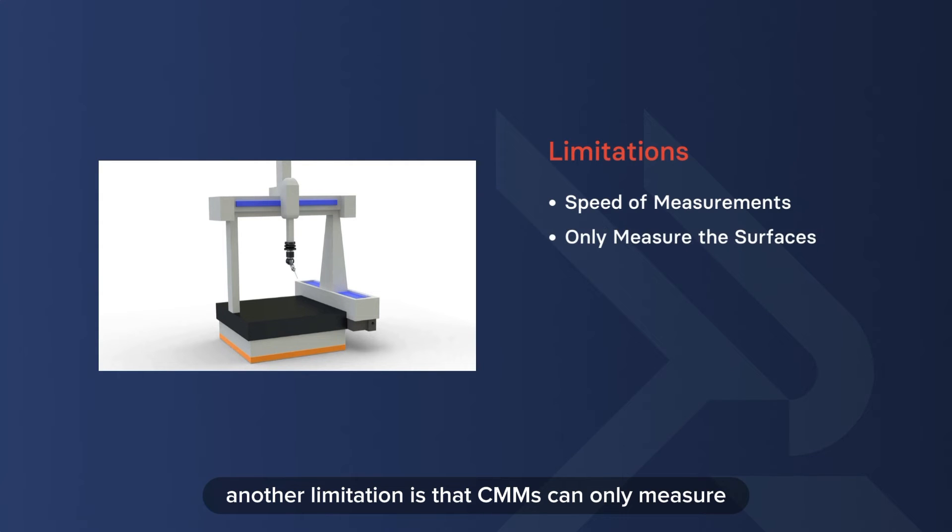Another limitation is that CMMs can only measure the surfaces they can physically touch with the probe. So, the probe tip size must match the features intended for measurement. If the tip is too large, it won't effectively capture finer details and internal features in complex parts.